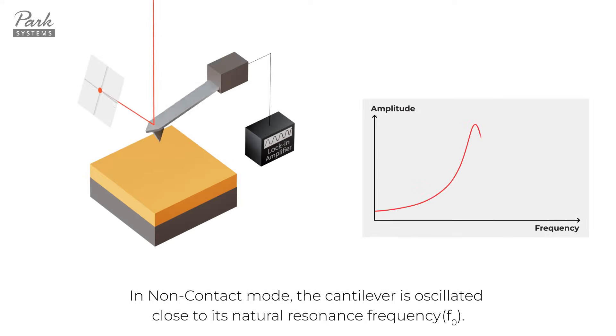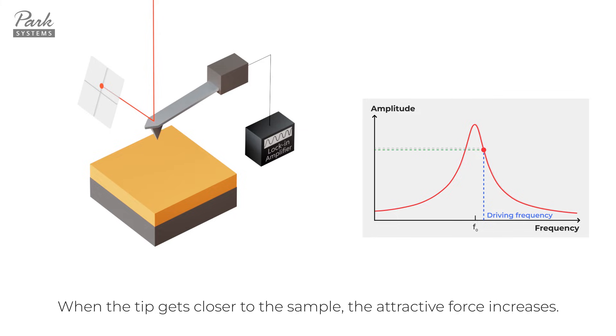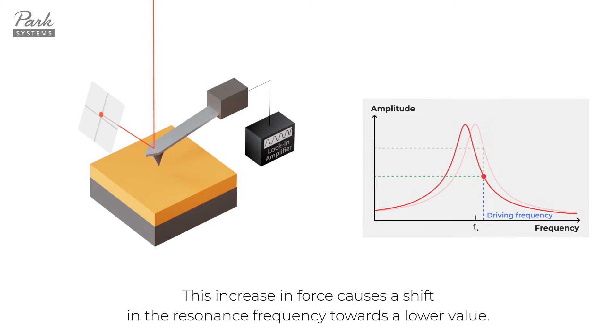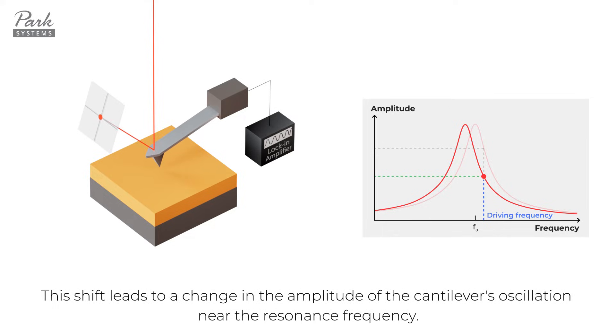In non-contact mode, the cantilever is oscillated close to its natural resonance frequency. When the tip gets closer to the sample, the attractive force increases. This increase in force causes a shift in the resonance frequency towards a lower value. This shift leads to a change in the amplitude of the cantilever's oscillation near the resonant frequency.